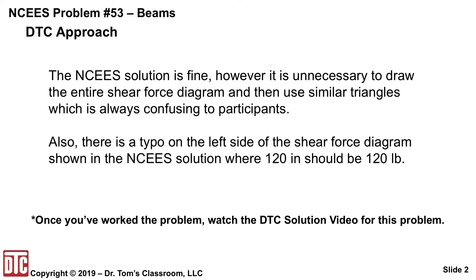The NCES solution is fine. However, in this particular problem, you have a cantilever beam with a constant distributed load over the half. It's 24 inches long, and the last 12 inches has a constant distributed load. They draw the entire shear force diagram and ask for the shear force 6 inches from the end, using similar triangles to come up with the value. Similar triangles is always confusing. We can do better than that. There's also a typo — they haven't done an errata yet. In that solution, they show 120 inches where, of course, it should be 120 pounds. That could raise some questions.